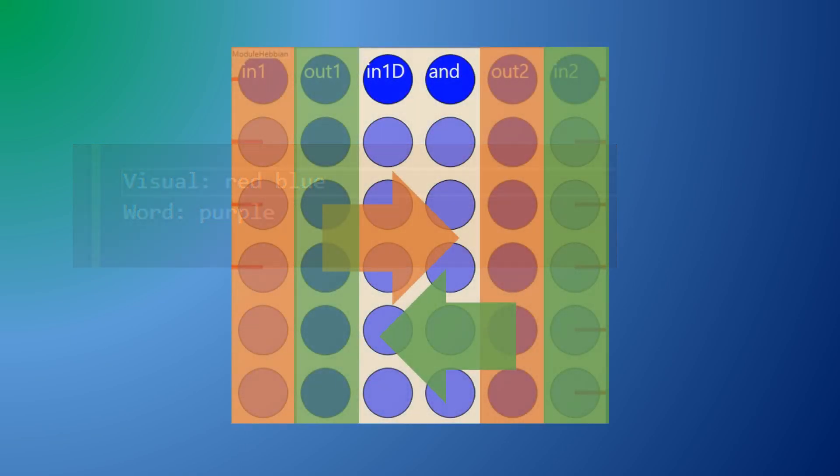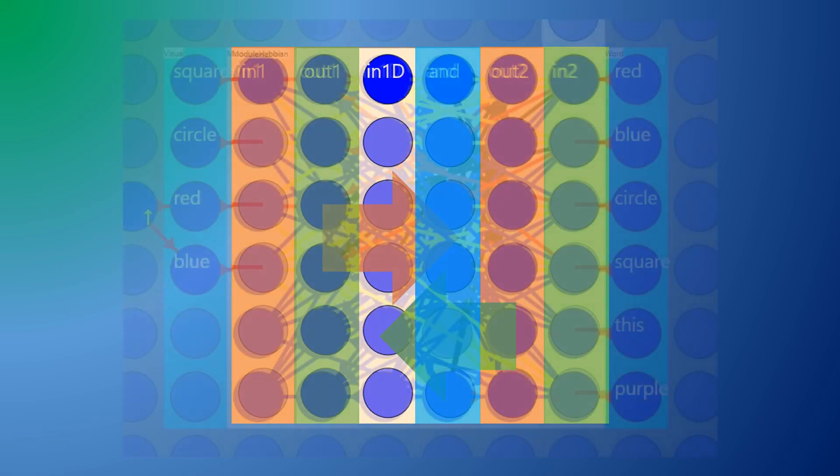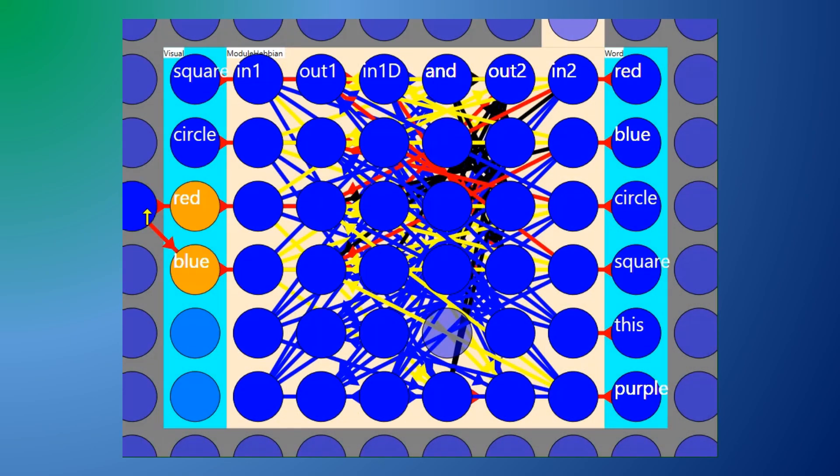To handle this learning I make use of another column of neurons as a hidden layer. After running the training the neuron fires the purple word output when red and blue visual inputs are received. The network can still recognize red and blue individually. If the purple output fires it suppresses the output of the individual red and blue outputs. Stimulating the purple word will still fire the red and blue visual so you might imagine a visual of red plus blue whenever you hear the word purple.